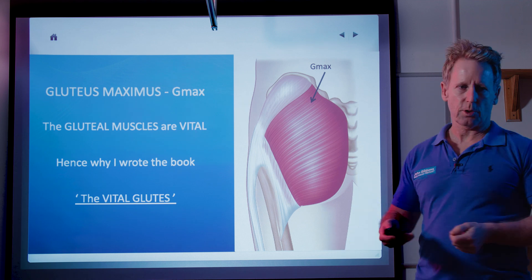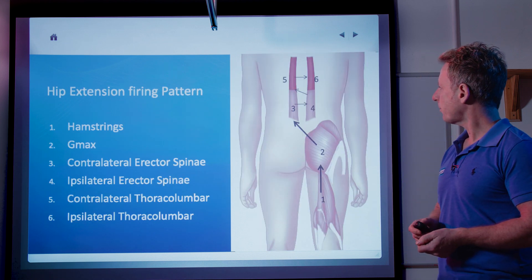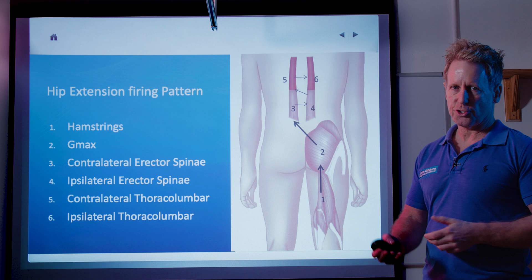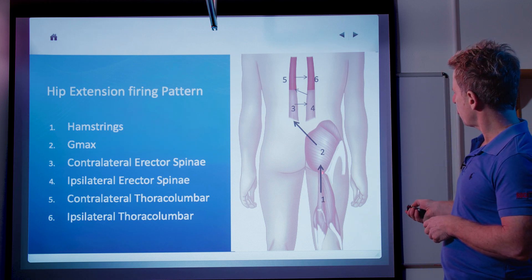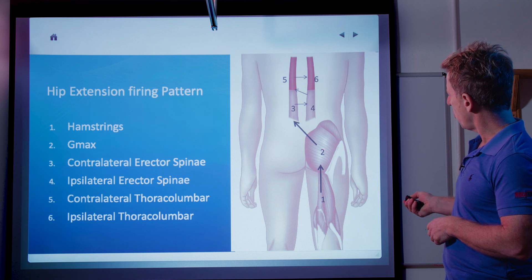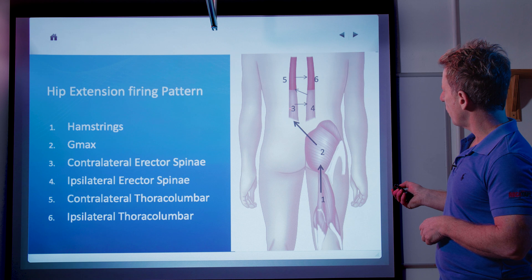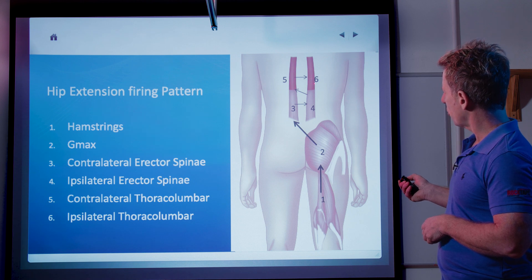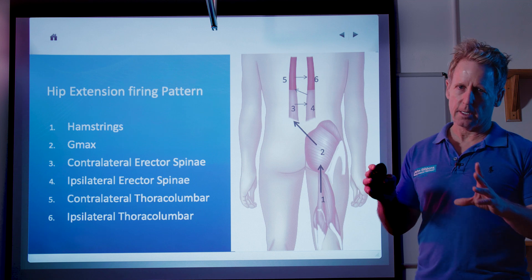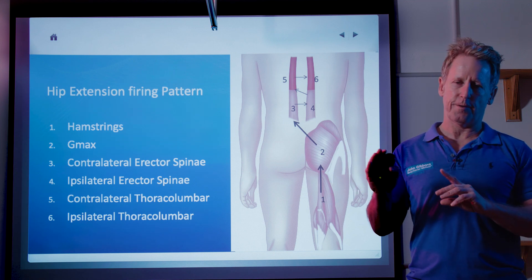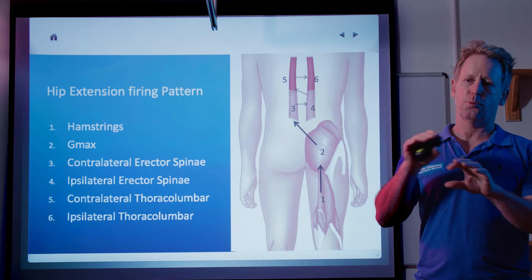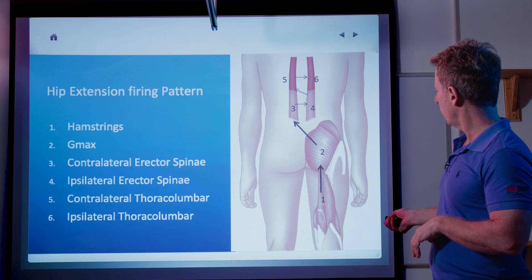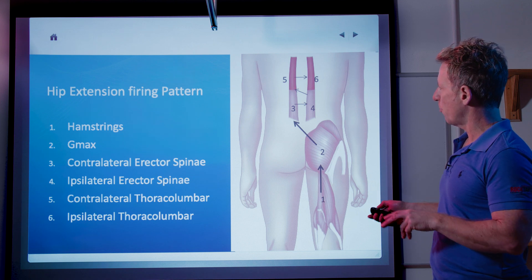Now, if you've got a problem with the glutes, look at the normal firing sequence. Imagine a patient is lying down and you ask them to lift their right leg an inch or two off the couch. The ideal sequence will be either the hamstring then glutes, or the glutes then hamstring — one or two. Then it goes to the contralateral erector, then ipsilateral erector, then contralateral thoracolumbar, then ipsilateral thoracolumbar. That's the six-cylinder firing sequence and it should fire in that order.